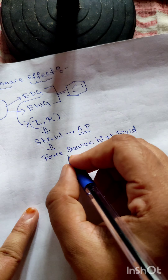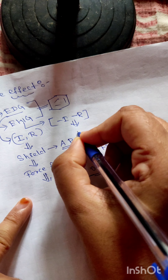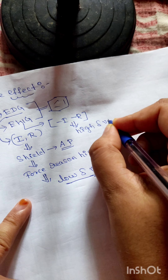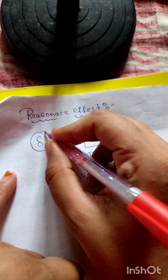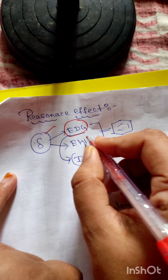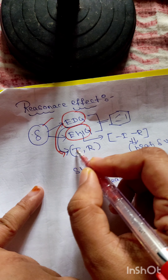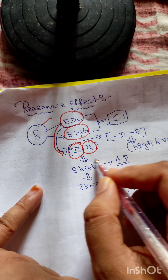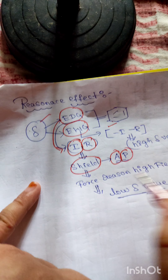The second case is electron withdrawing groups. These show a negative inductive effect and negative resonance effect, meaning the shielding of aromatic protons is reduced — resonance occurs downfield. Downfield means a high delta value. So electron donating groups give a low delta value and electron withdrawing groups give a high delta value, depending on negative I and negative R effects.